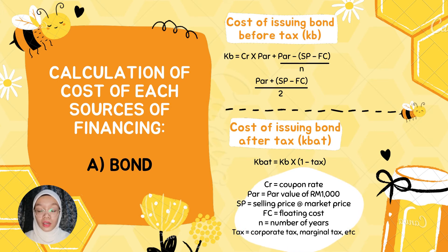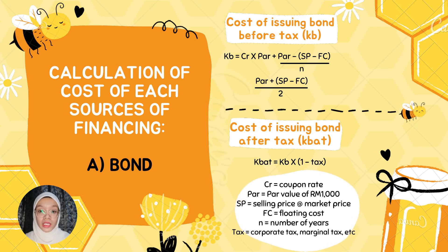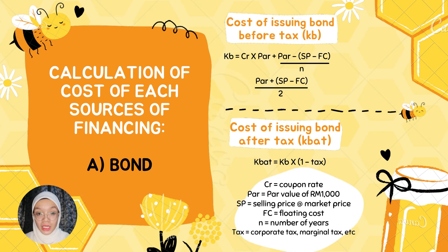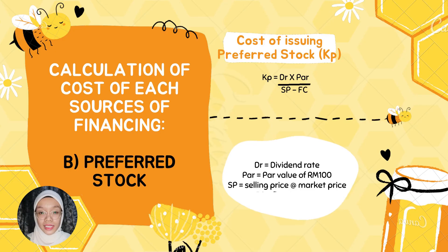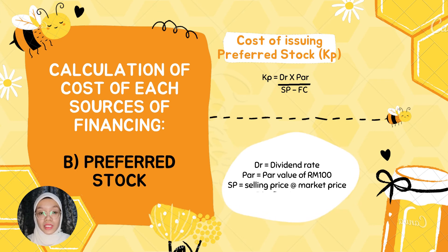Now I will teach how to calculate the cost of each source of financing. First is bond. Bond has two calculations: cost of issuance of bond before tax (Kb) and cost of issuance of bond after tax (Kb after tax). The calculation for Kb is: Kb = [CR × Pa + (Pa − (SP − FC)) / N] / [(Pa + (SP − FC)) / 2]. The calculation for Kb after tax is: Kb after tax = Kb × (1 − tax rate). CR is the coupon rate, Pa is par value of RM100, SP is selling price, and FC is floating cost.